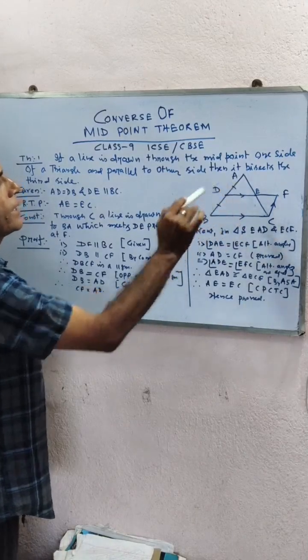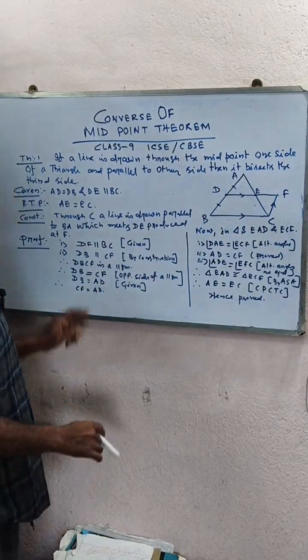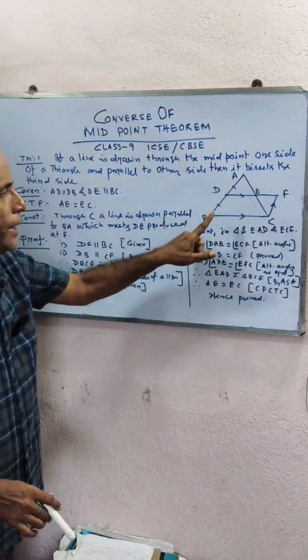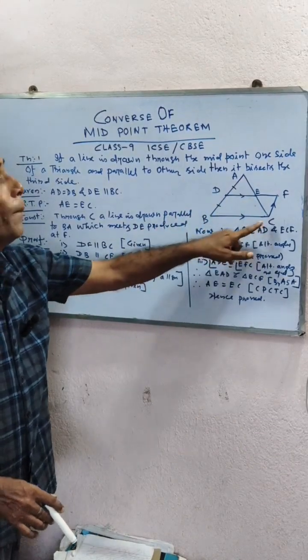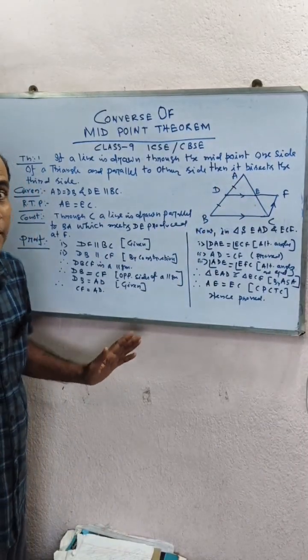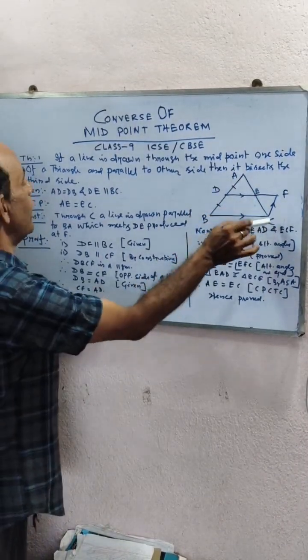Given: D is the midpoint of AB and DE parallel to BC. You have to prove that AE equal to EC. That means you have to prove that AE equal to EC.